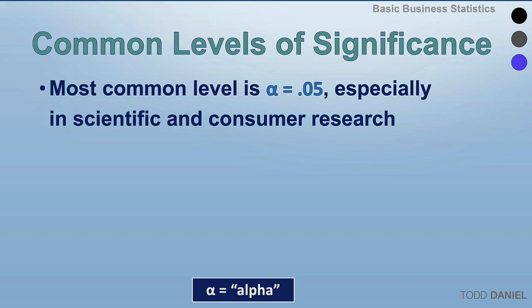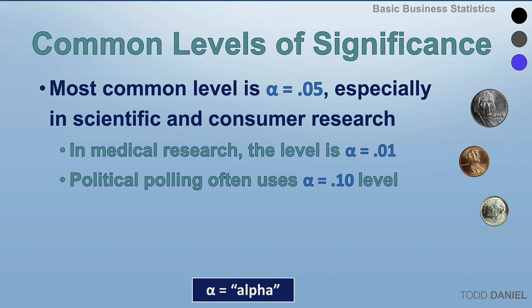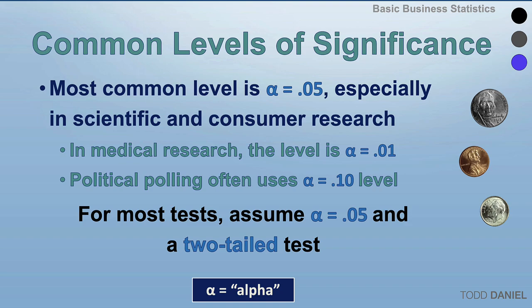The most common level of significance is 0.05, especially in scientific and consumer research. In medical research, where quality matters more, we may tighten the criteria to 0.01 or 1%. Political polling often uses 0.10 or 10% because the consequences are not as dire if they're wrong, and they can use smaller sample sizes given the less restrictive confidence interval. For most tests in this course, assume alpha equals 0.05 and a two-tailed test.